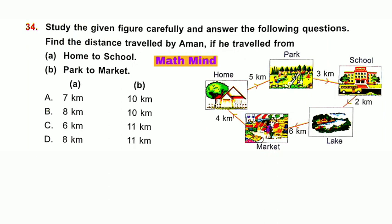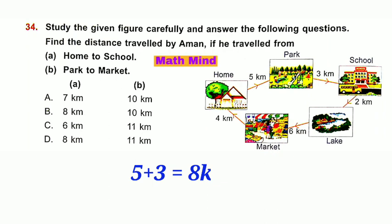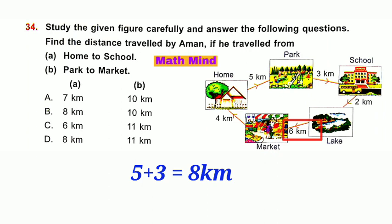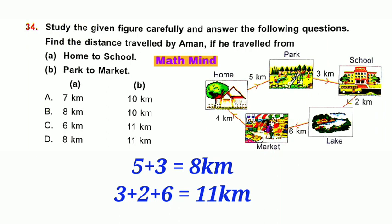Question number 34: Find the distance travelled by Oman. A — home to school: home to park is 5 km, park to school is 3 km, total = 5 + 3 = 8 km. So A is 8 kilometres — options B and D correct, A and C cancelled. B — park to market: 6 + 2 + 3 = 11 kilometres. So, option D is correct.